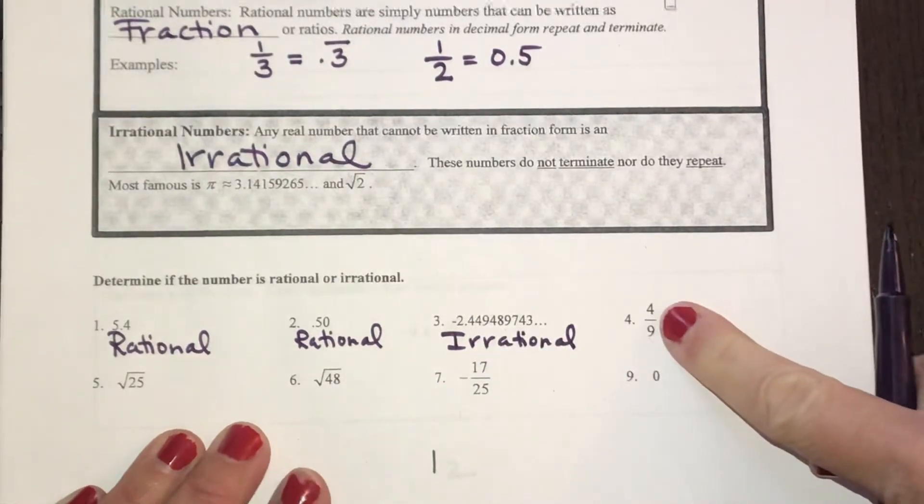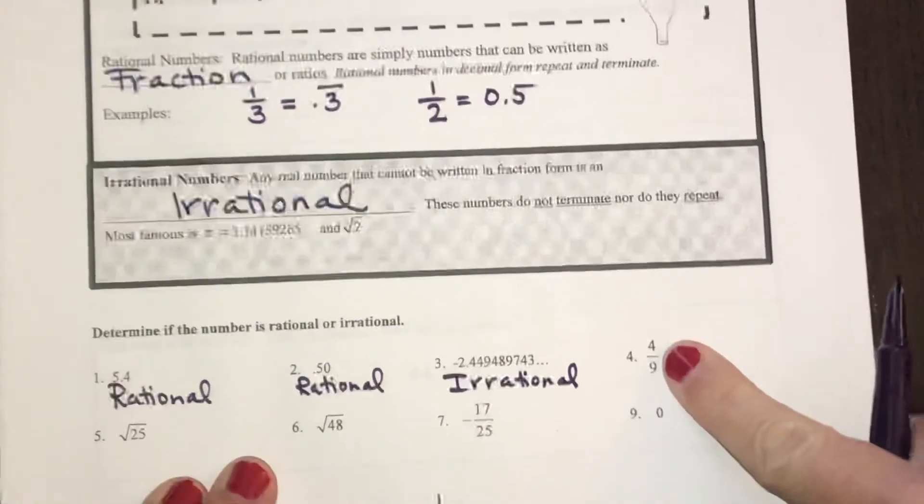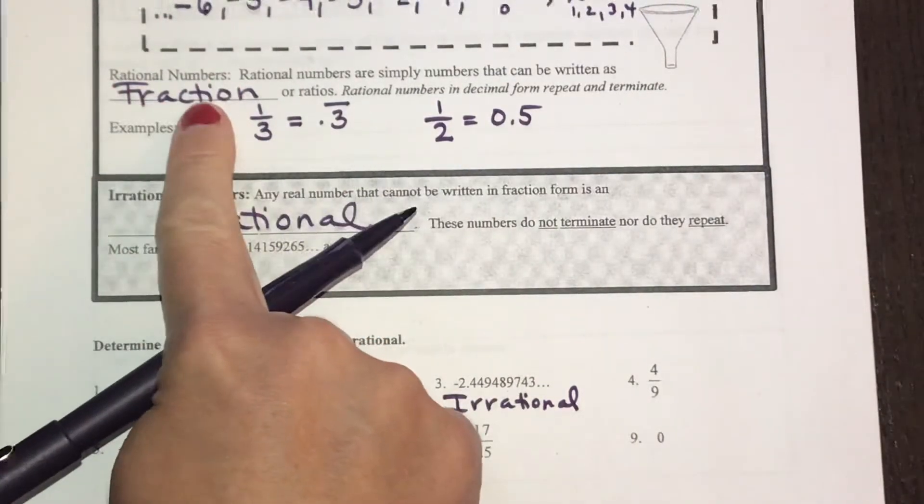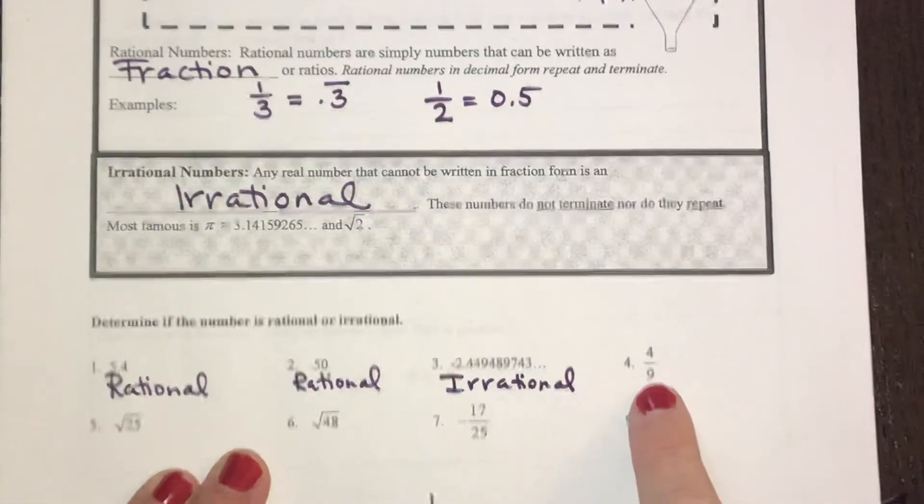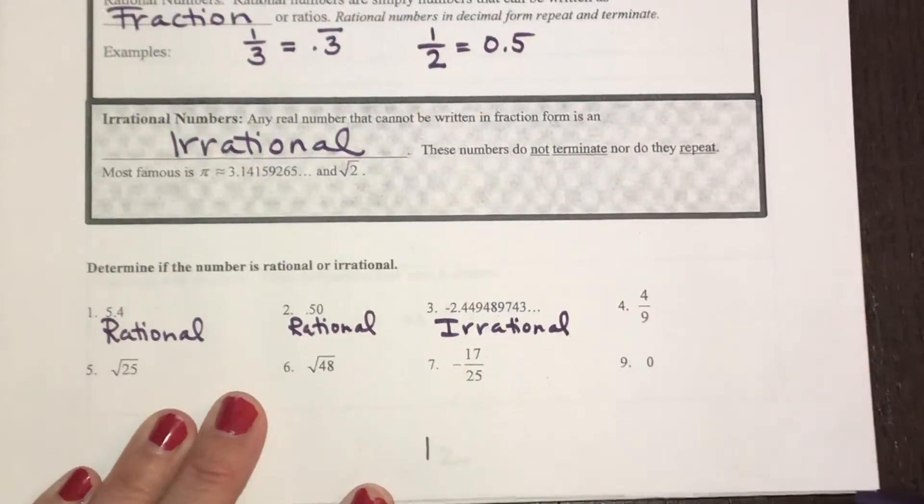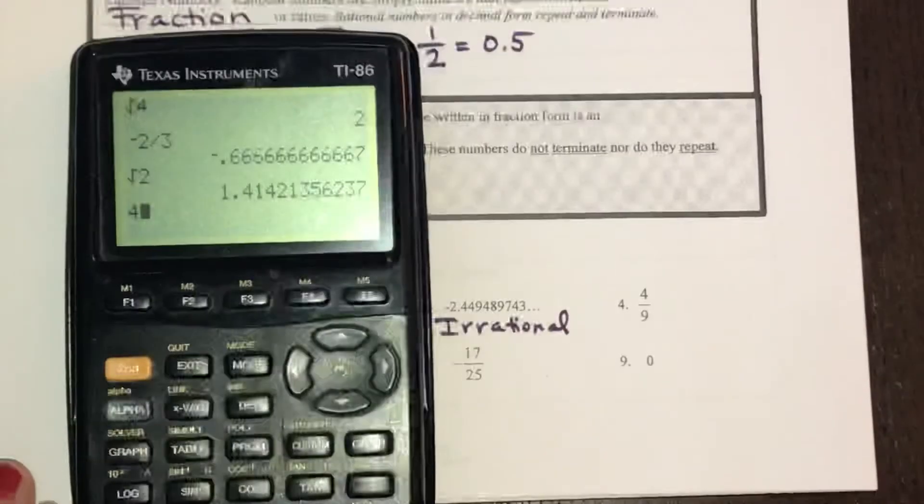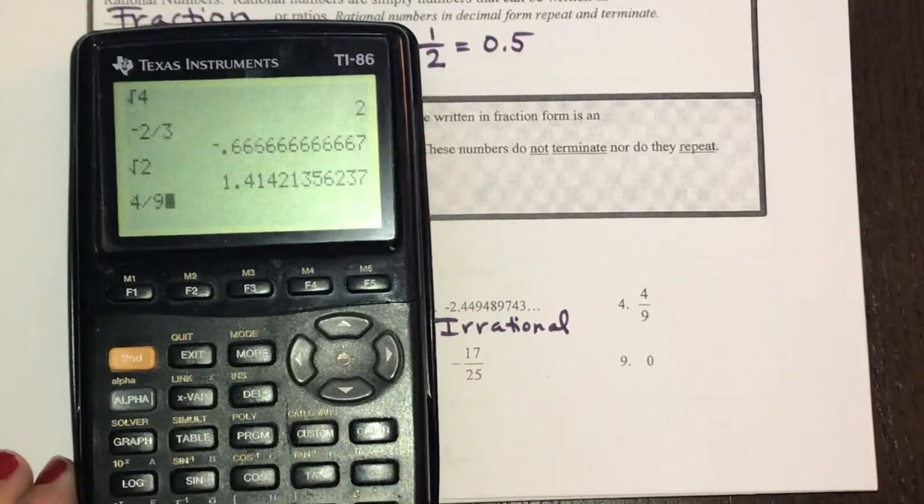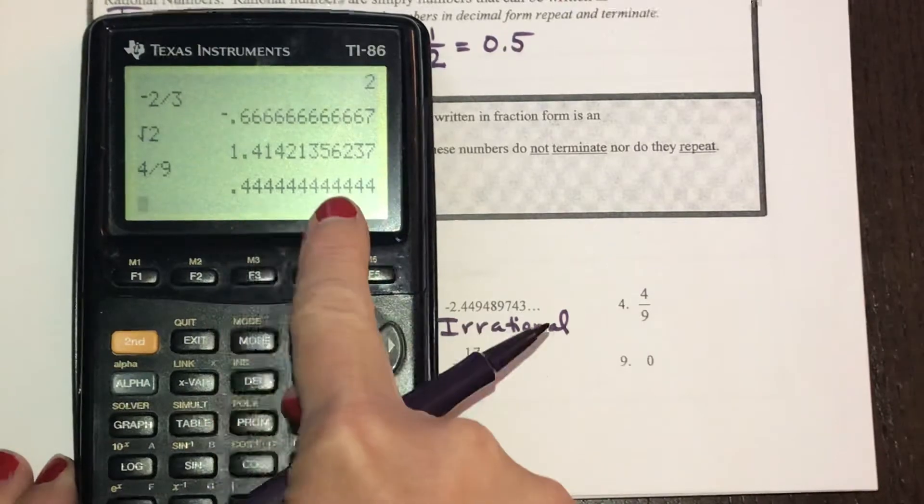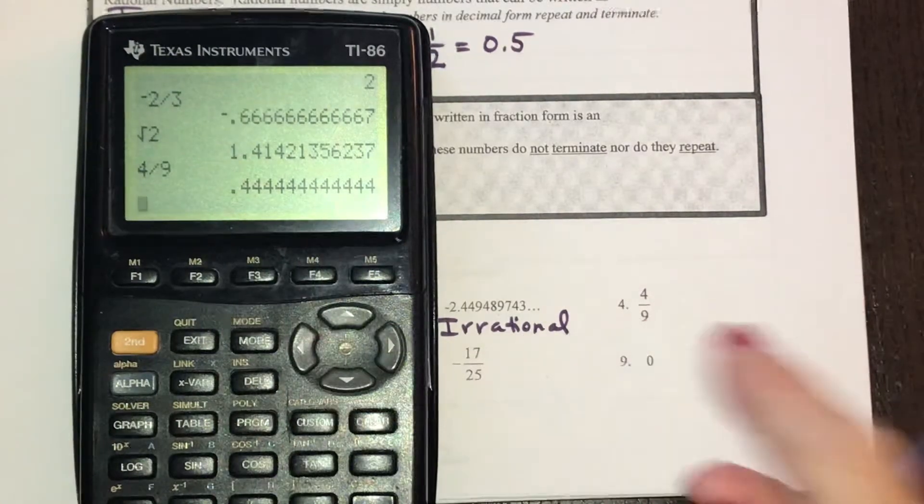Anything that can be written as a fraction, rational numbers can be written as a fraction, would be rational. But if you're not sure you can always just get the decimal for that fraction. So 4 divided by 9, the decimal here repeats and a repeating decimal would be rational.